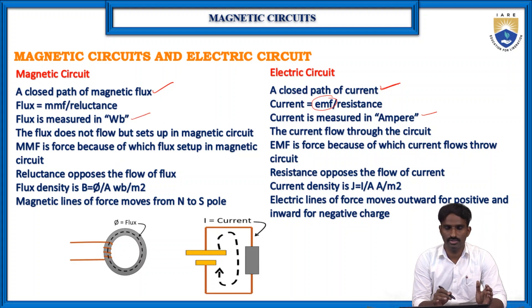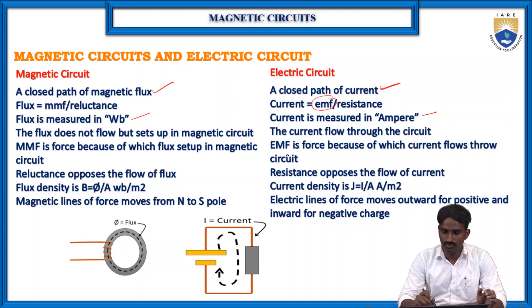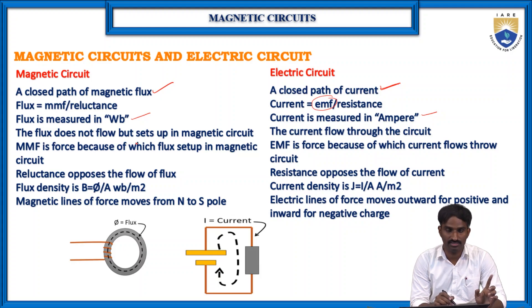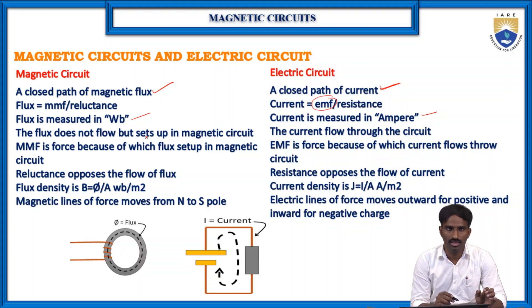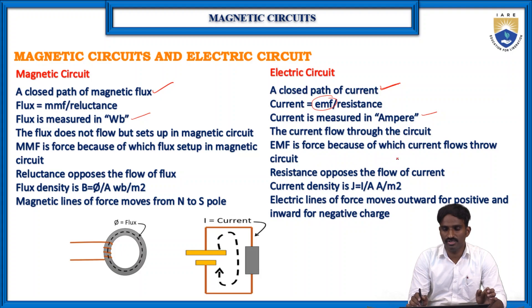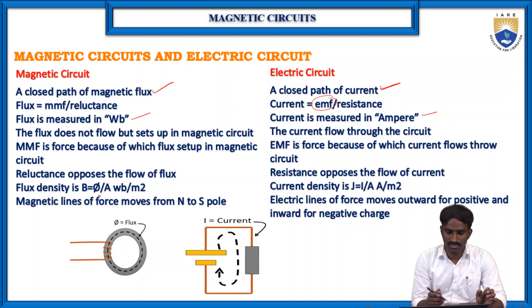To compare: flux equals MMF by reluctance, and current equals EMF by resistance. Flux is measured in webers and current is measured in amperes. The EMF is a force because of which current flows through the circuit. Similarly, the flux does not actually flow but sets up in the magnetic circuit. The magnetomotive force is the force because of which the flux is set up in the magnetic circuit. So we should not say 'flow of flux'; we say the flux sets up in the magnetic circuit.